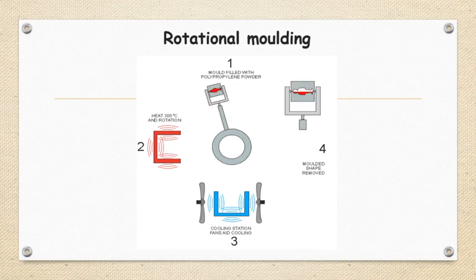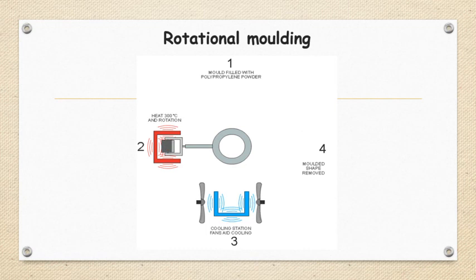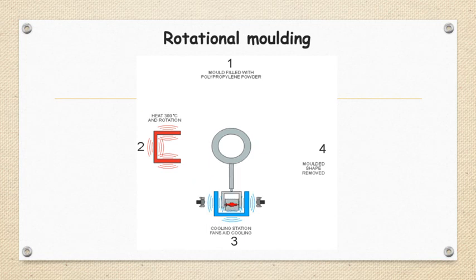For today's discussion, we have taken this rotational molding process, which is generally used for processing thermoplastic materials. Through this animation, you can observe what are the different processes which are occurring during rotational molding process.